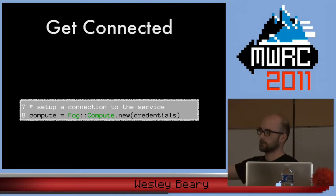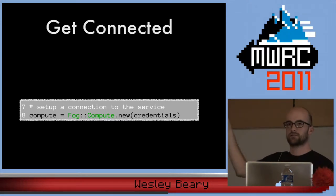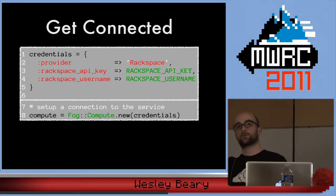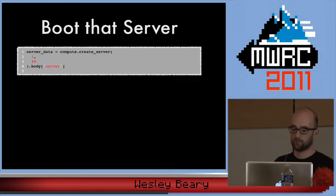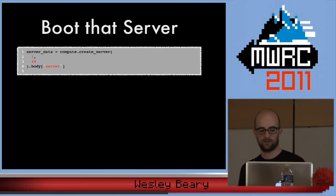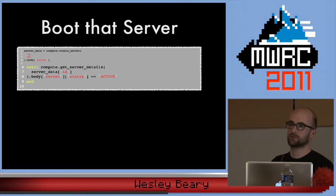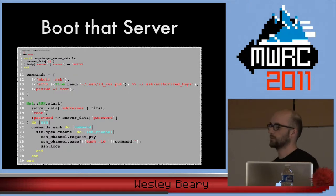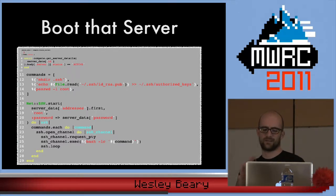The first thing you do is create a connection. Compute is one of the abstractions — it represents all the different compute providers in an abstract way. You pass some credentials in. This is what a credential set looks like for Rackspace in particular. We're saying the provider is Rackspace and here are my Rackspace credentials. To boot a server, you call create_server and pass two params, get back the server body, sit around and wait until the server becomes active, then run some SSH commands — place your keys, turn off the root password since Rackspace hands you one back, and start it up.